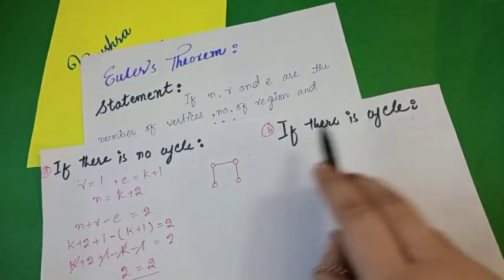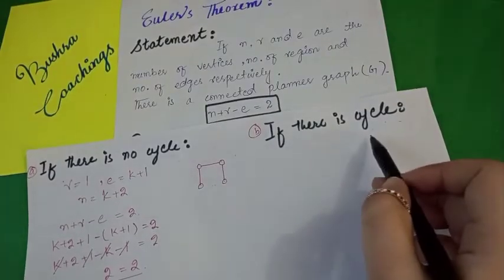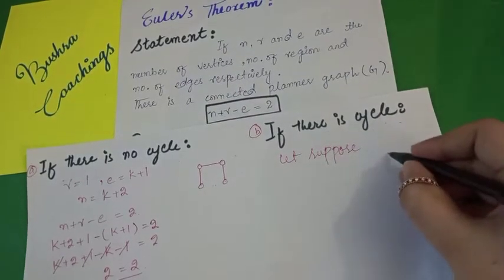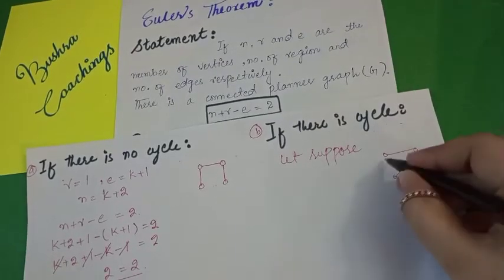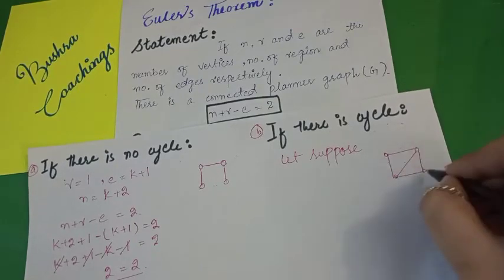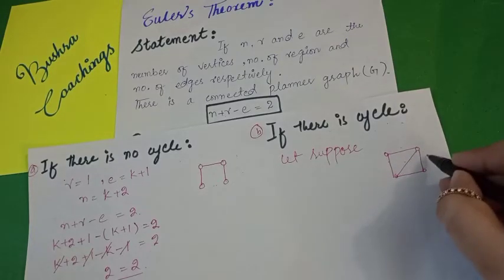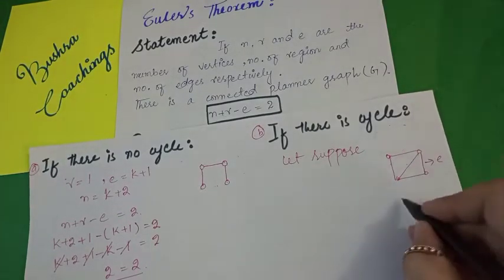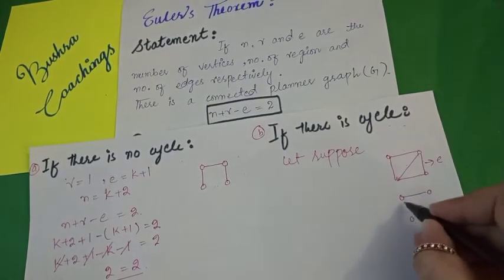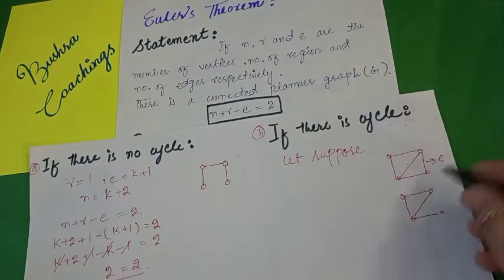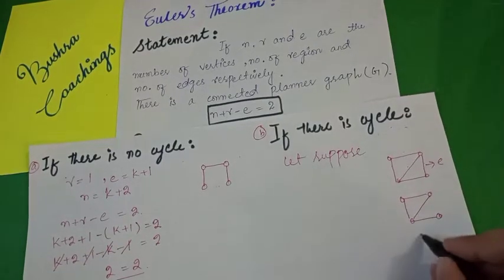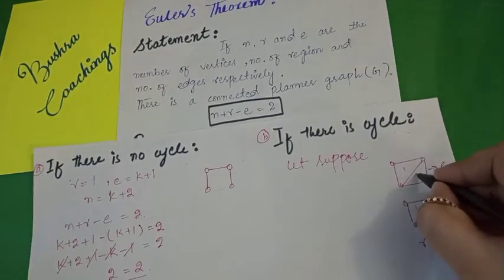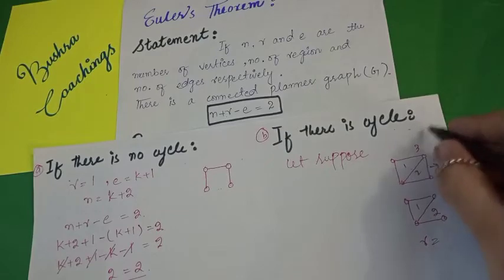Now Part B — if there is a cycle. Suppose we have a graph with 4 vertices that contains a cycle. We eliminate one edge E from this graph. After eliminating that edge, we count the regions: the graph has region 1, region 2, and region 3, so R equals 3.